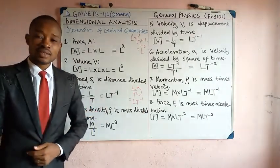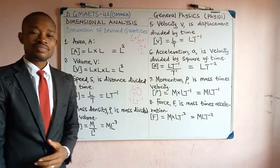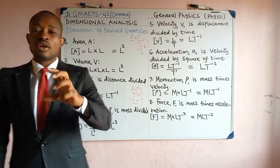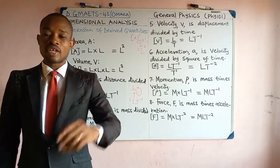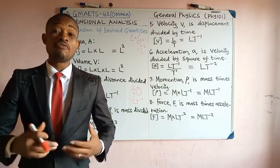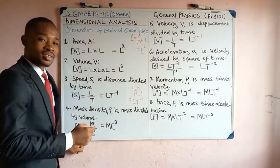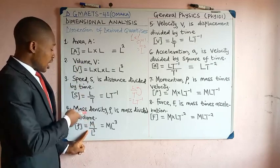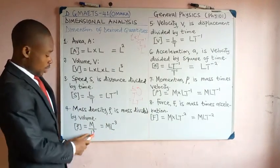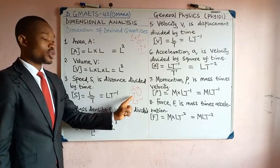Mass density — also simply called density, symbol rho — is by definition mass divided by volume. So the dimension of density is the dimension of mass divided by the dimension of volume. The dimension of mass is M, and the dimension of volume is L³. Therefore, the dimension of density is M divided by L³, which becomes ML⁻³.